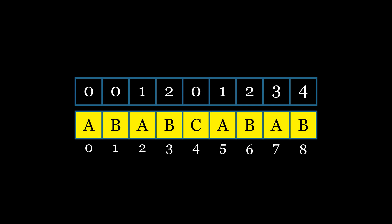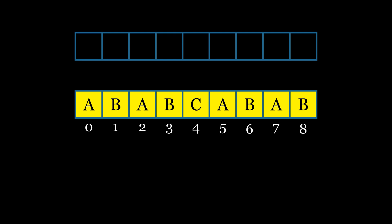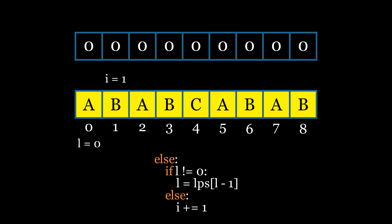Now that we understand the intuition behind the LPS table, let's go through the steps of constructing it. We initialize an array with the same size as the pattern and set all of its elements to 0. We initialize two variables: i set to 1 and l set to 0. We then enter a loop where we compare the pattern elements at the current positions of i and l. If the characters don't match and l is not 0, we update l to the element at index l minus 1 in the LPS array. If l is 0 and there's no match, we simply increment i by 1.